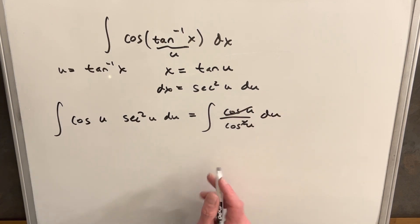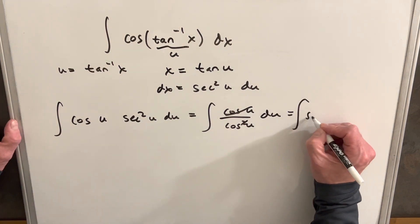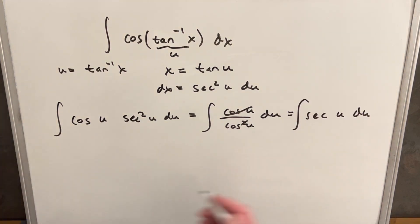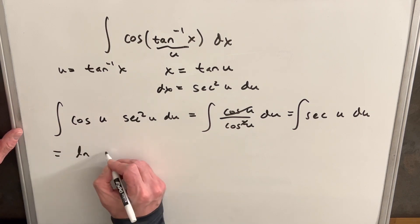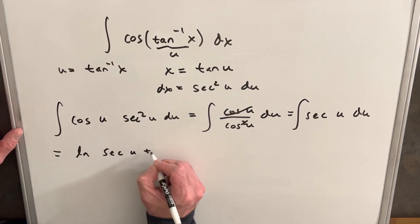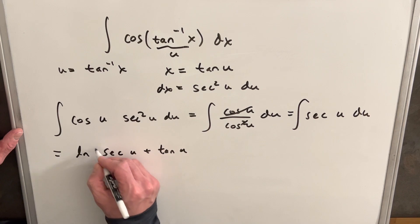Then we get a cancellation so we have one over cosine of u. But that's just secant u. And we know what that is. That integral is the ln of secant u plus tan u absolute value plus c.